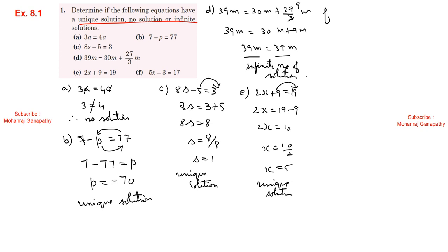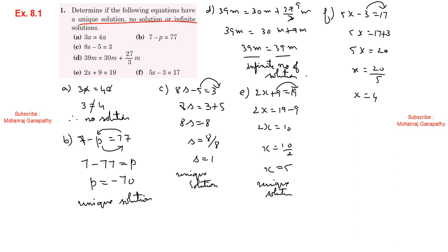Part f: 5x minus 3 equals 17. Moving constant terms to one side: 5x equals 17 plus 3, so 5x equals 20. Then x equals 20 divided by 5, therefore x equals 4, which is a unique solution.